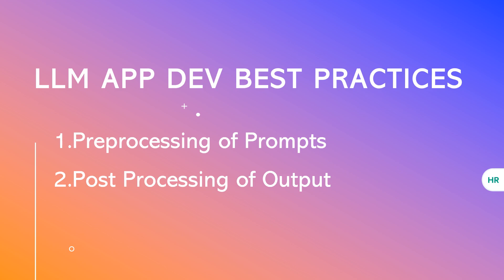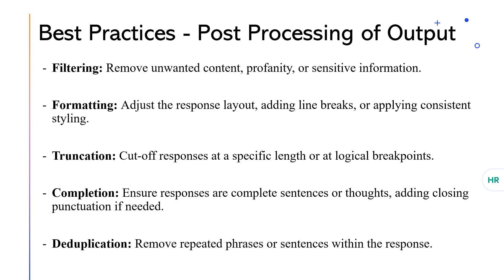Now that we've explored a range of prompt engineering techniques, let's delve into best practices for optimizing both the input and output stages. Understanding how to pre-process prompts and post-process outputs can significantly enhance the overall performance and reliability of your AI applications. Pre-processing is like getting your ingredients ready before cooking — it ensures the LLM has the best possible foundation to generate accurate and relevant responses. The first step is cleaning: removing unnecessary elements like extra spaces, strange symbols, or unwanted formatting to create a clear, focused environment for the LLM.